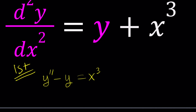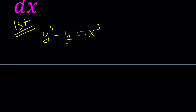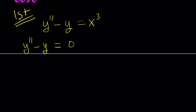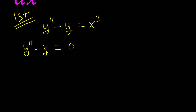To solve this problem with the first method, we're going to look at the homogeneous case first, which is when we replace x cubed with zero. This is a pretty easy equation to solve — there's a lot of good material on this if you search for homogeneous linear equations.